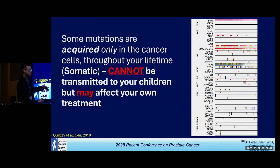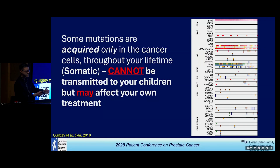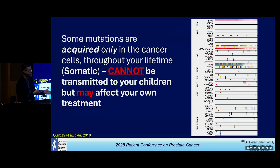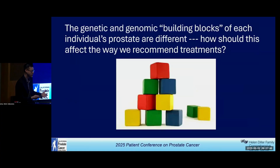The other types of mutations are those acquired over the course of your lifetime — we call these somatic mutations. Cells are constantly dividing as we age, and we're exposed to things that cause mutations, such as radiation from the sun. These cannot be transmitted to your children, but they may affect your own treatment. We've now discovered that many different genes all lead down the same road of causing prostate cancer, and different patients essentially have different genetic building blocks making their cancer.